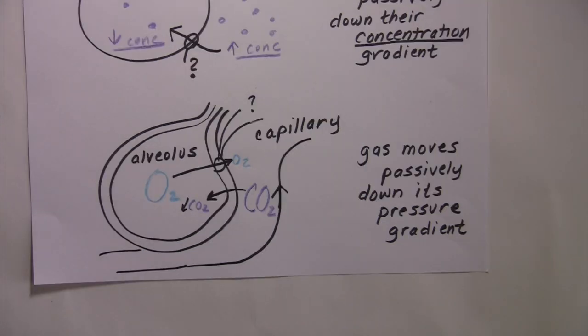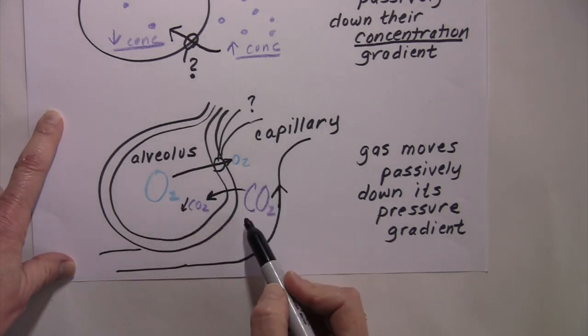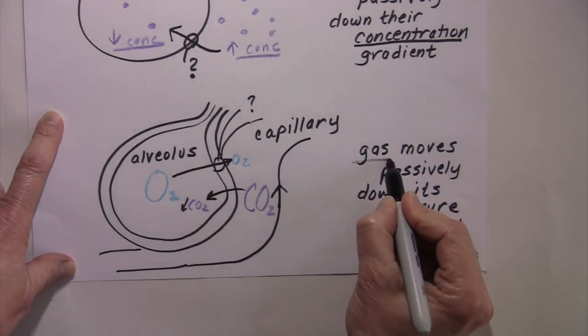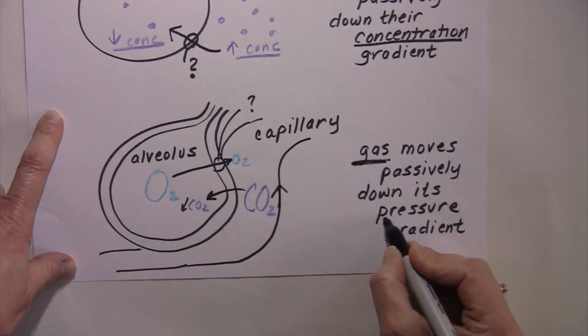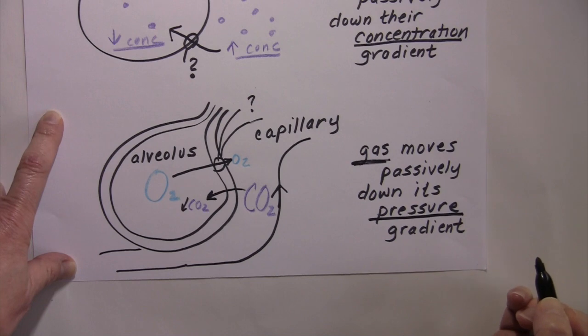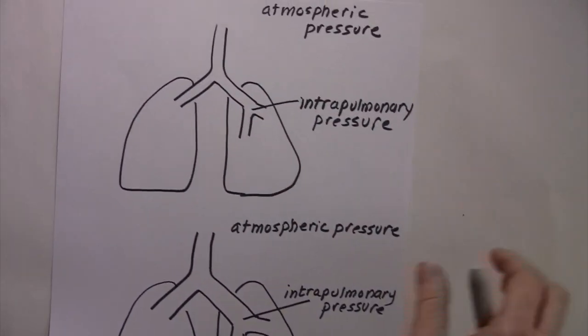So this example is in a bit of a micro environment, right, because we're looking at alveolus and its blood supply. But still we see that when you look at the movement of a gas, that gases also move passively just down their pressure gradients. And so this is true on a micro level, and it's also true on a more macro level.